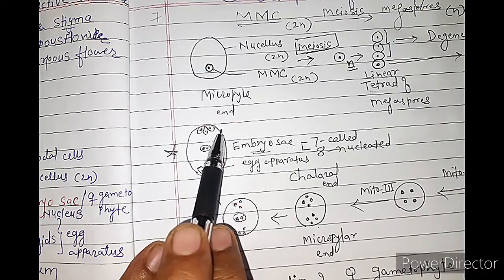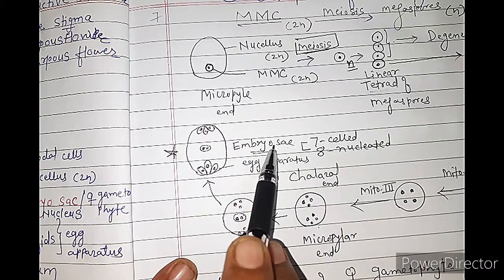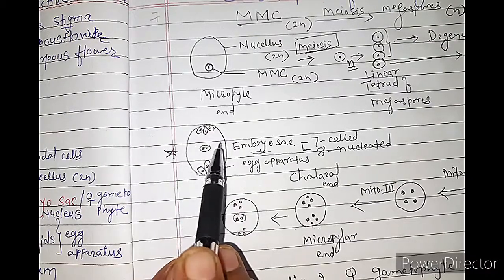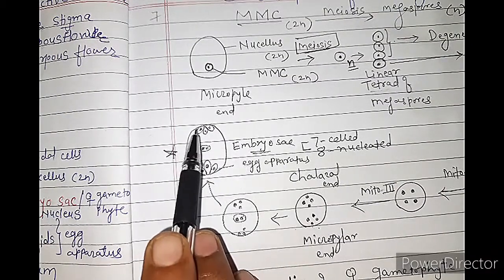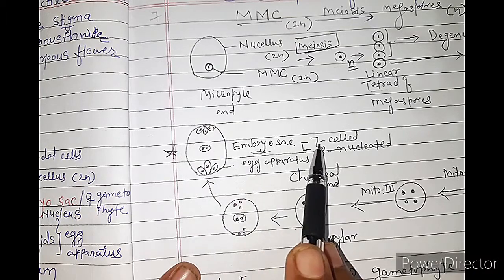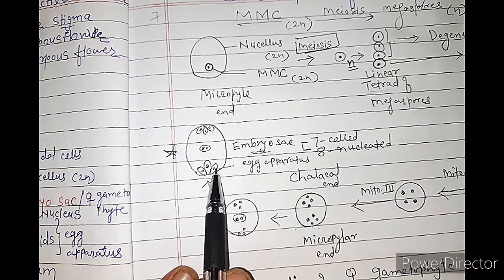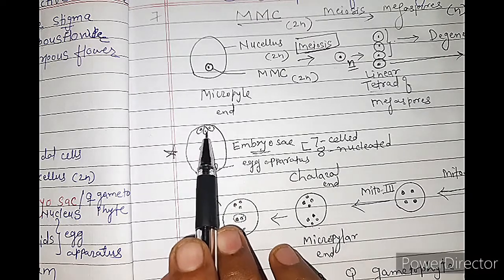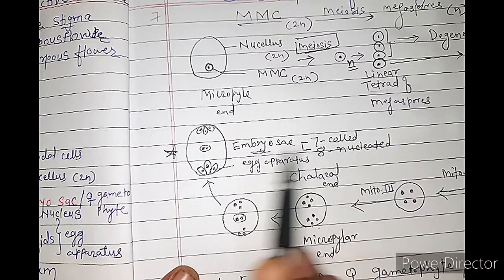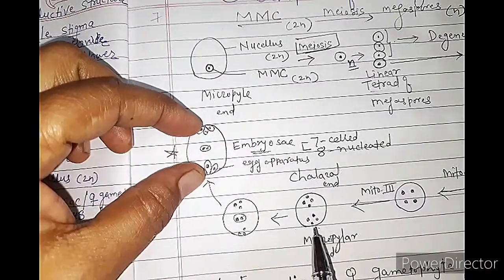These are the 3 antipodal cells. This total structure is the embryo sac. A question may be asked in the examination: sketch and label the embryo sac, or sketch and label the anatropous ovule. If you draw the embryo sac, you draw only this structure. Each embryo sac has 7 cells — 1, 2, 3, 4, 5, 6, 7 — and 8 nuclei — 1, 2, 3, 4, 5, 6, 7, 8. So it is a 7-celled and 8-nucleated structure. In this way the embryo sac is formed inside the nucellus.